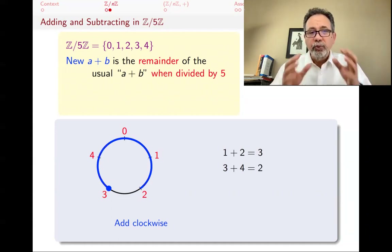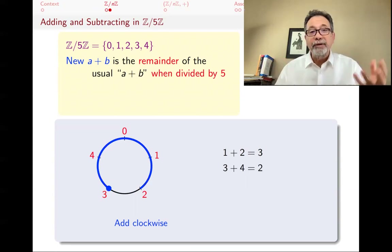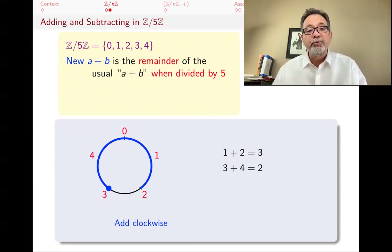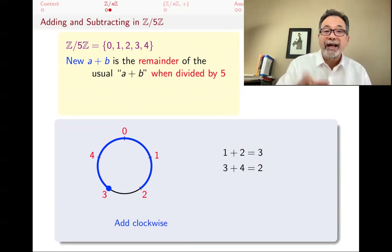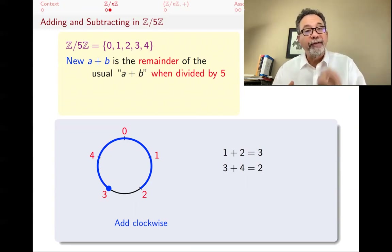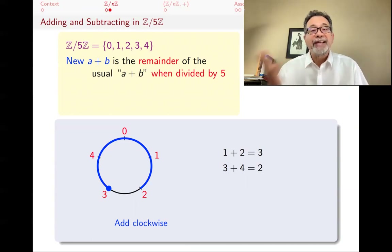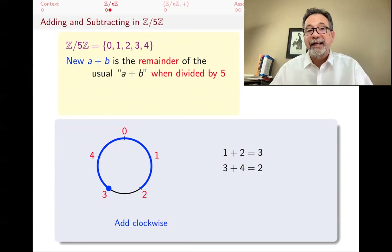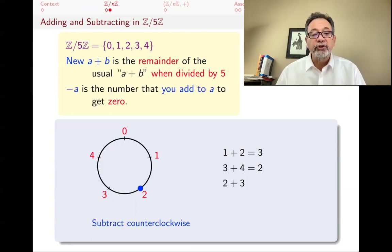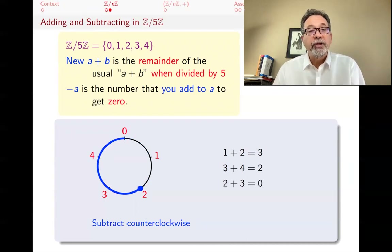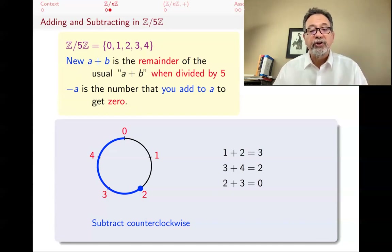This is not a good way of modeling pizzas — 3 pizzas and 4 pizzas are not going to be 2 pizzas. But for example, if you had a clock, then Z mod 12Z would be a very good model for it. We say 2 hours after 11 is 1 — we're saying 11 plus 2 is 1, and that makes sense. What's 2 plus 3 in Z mod 5Z? You start at 2, go 3 units clockwise, and you get 0. So 2 plus 3 is 0, which means 2 and 3 are inverses of each other.